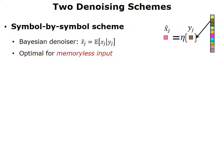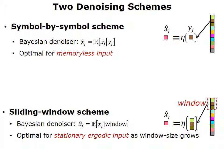Let's look at two possible denoising schemes. First, the symbol-by-symbol scheme that considers an individual symbol xj corrupted by noise to yj, and then we apply a Bayesian denoiser eta that calculates the conditional value of xj given yj. This Bayesian denoiser is optimal for memoryless inputs, but of course many inputs are not memoryless. So we consider instead a sliding window scheme, where instead of conditioning on yj we condition on a window around yj, and the sliding window scheme is asymptotically optimal for stationary ergodic inputs as the window size grows.